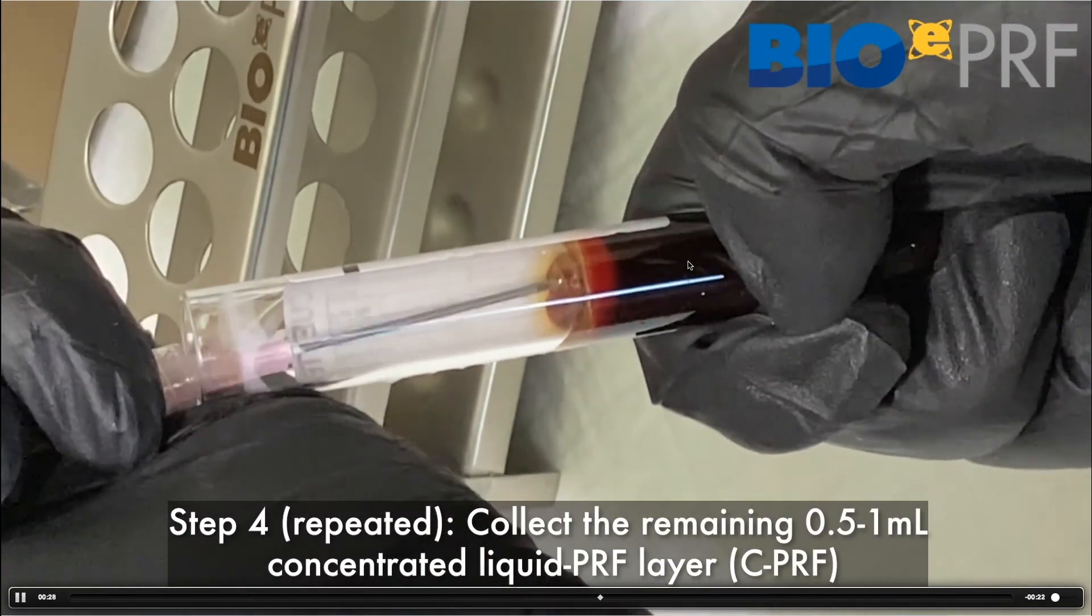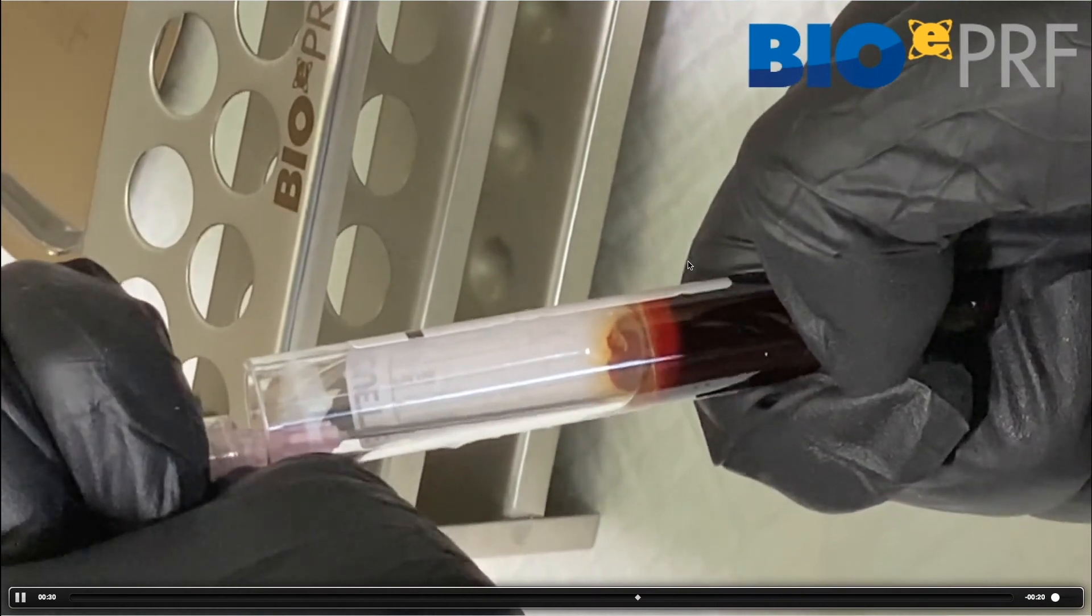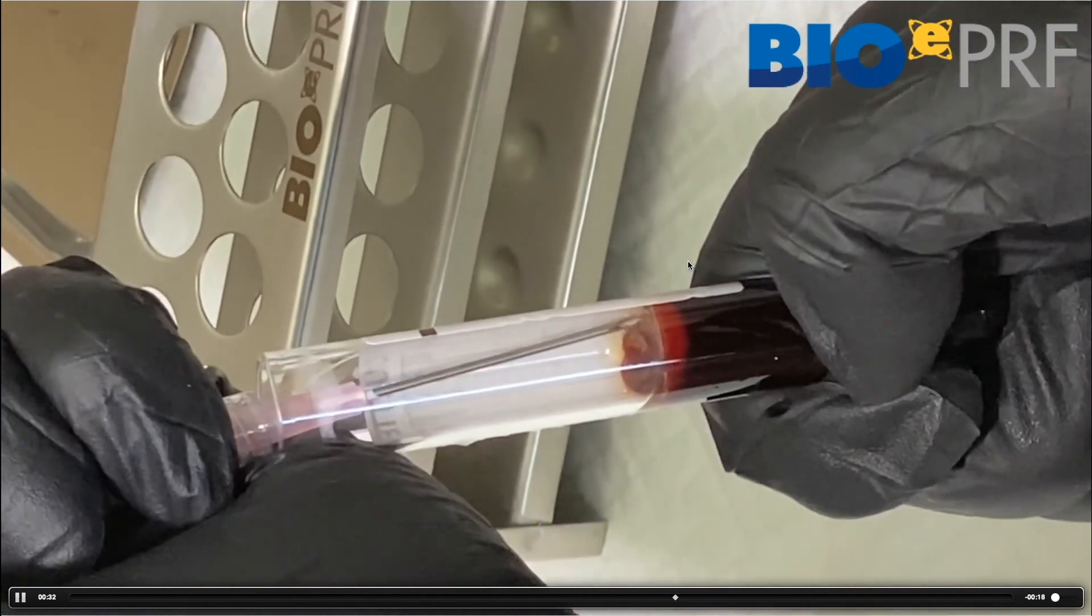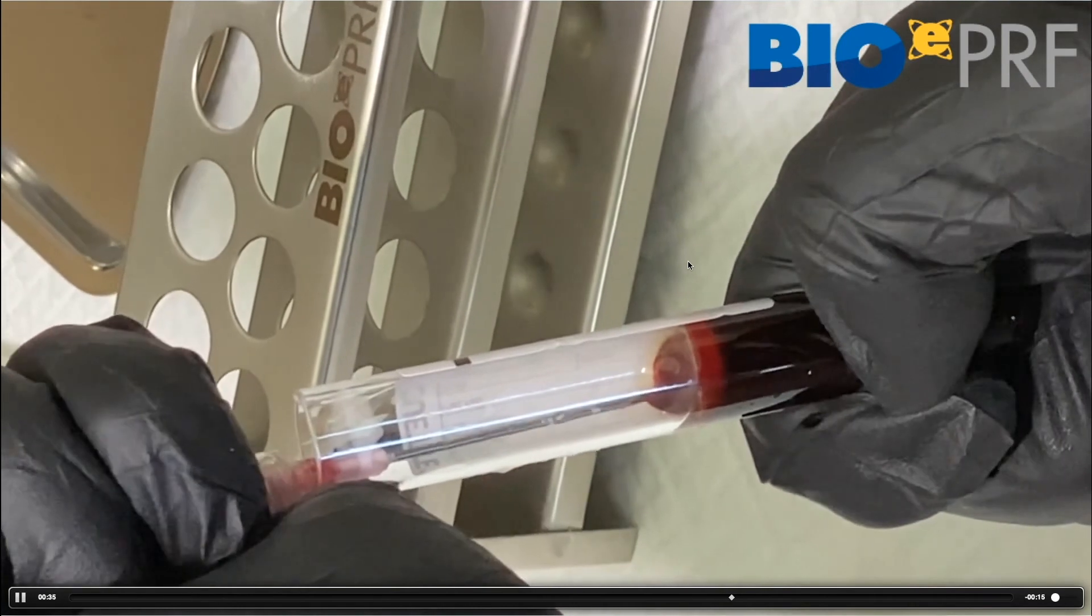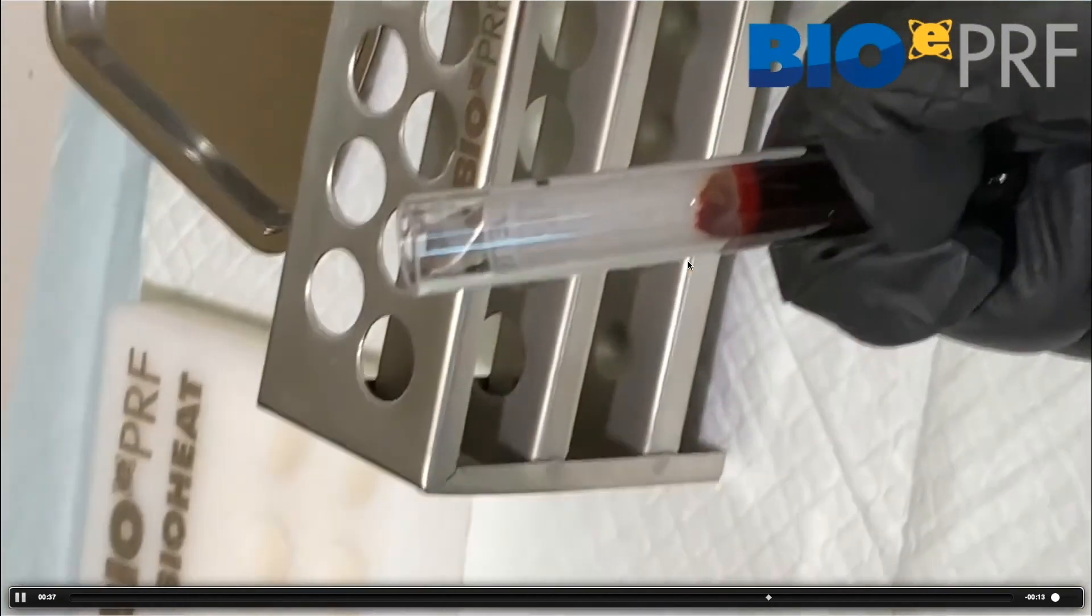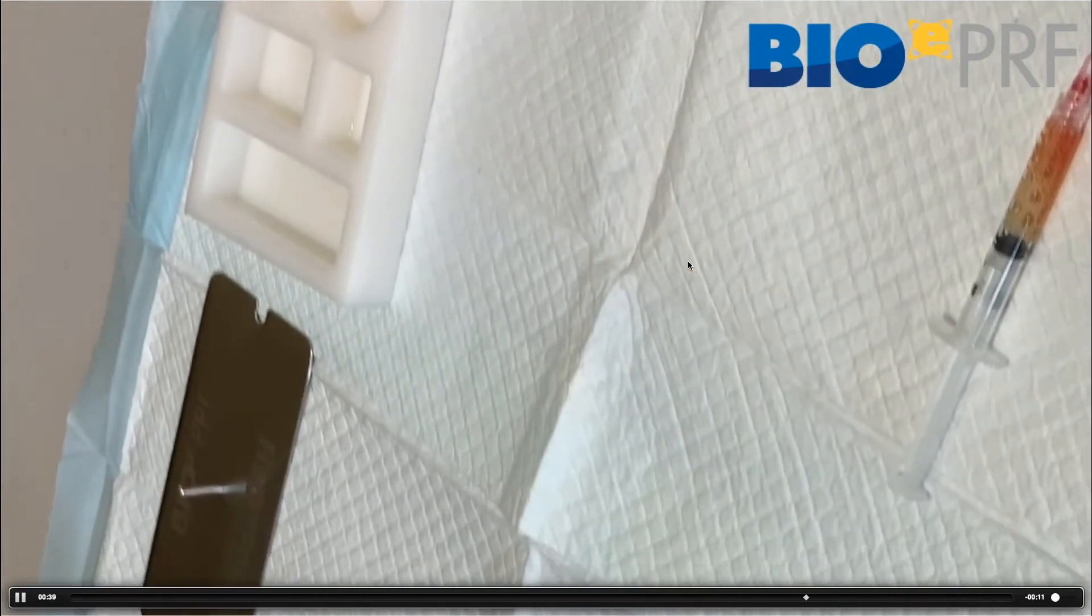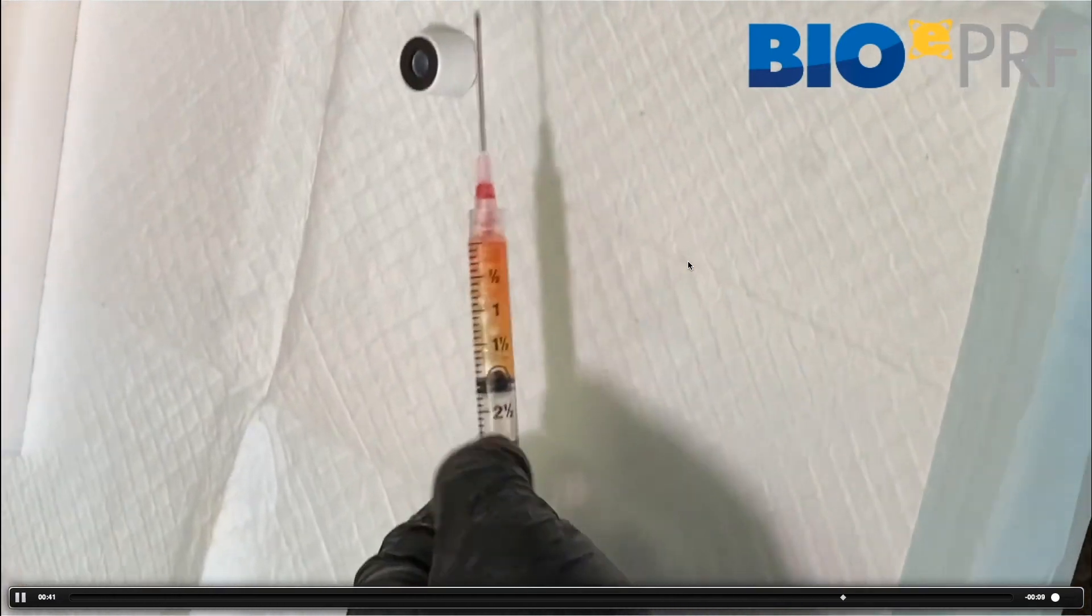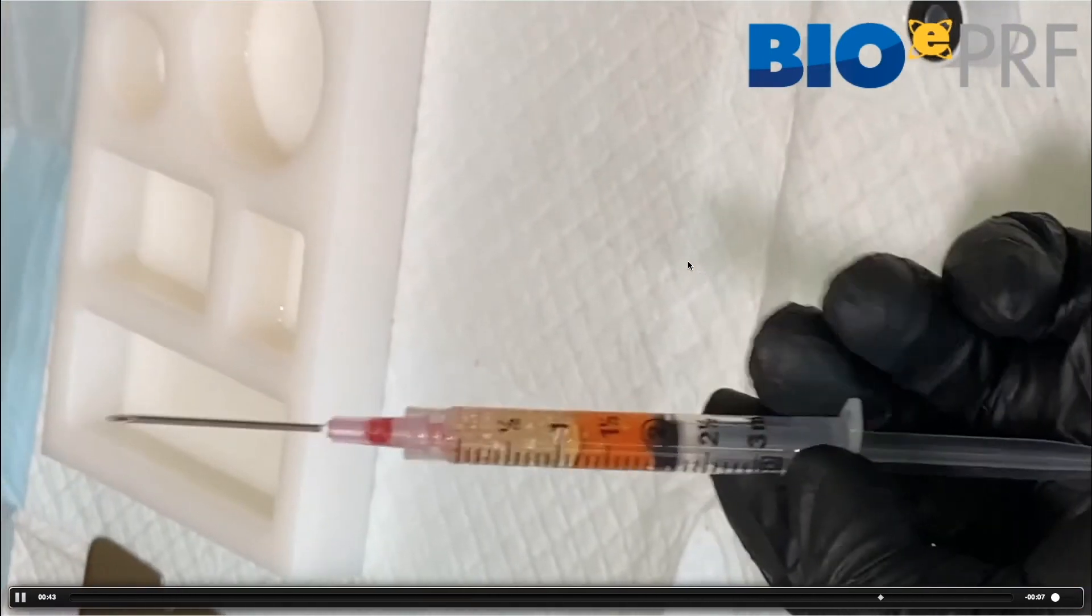Like I said, about 15 to 16 times the platelet count from baseline, whereas typical I-PRF is usually two to three fold. So there's a big difference here. And like I said, we'll take a little bit of the red blood cells as we reviewed in chapter three.